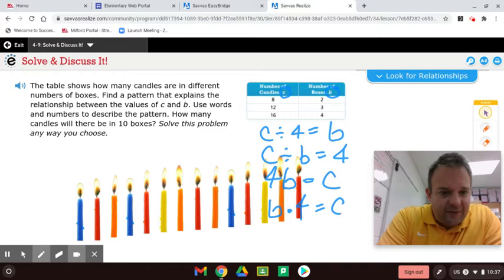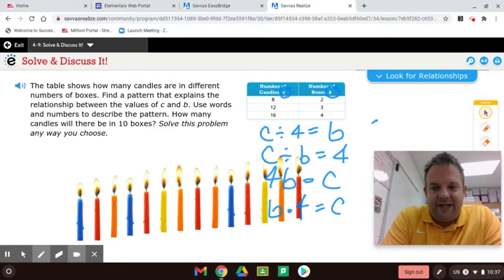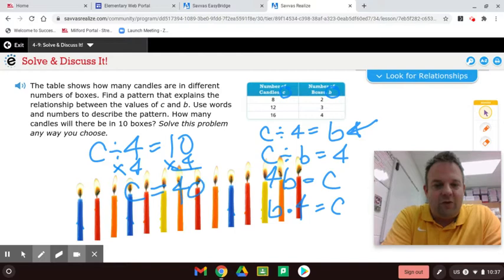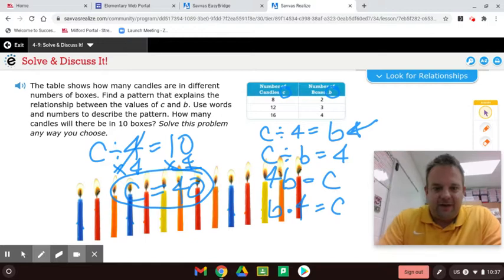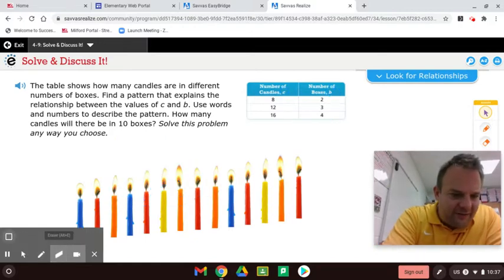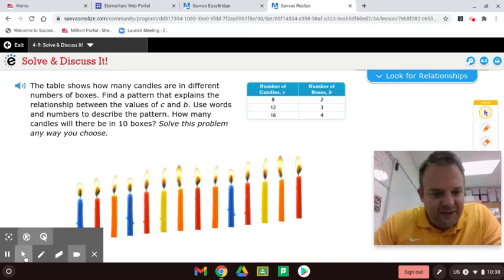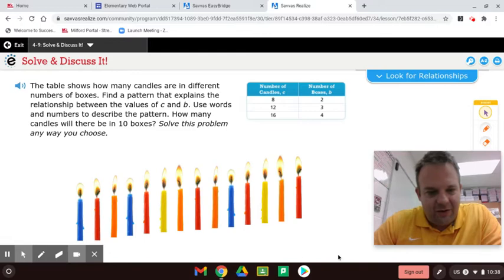How many candles will there be in 10 boxes? We would substitute 10 into here. So now you have C divided by 4 equals 10. The inverse operation of dividing by 4 is multiplying by 4, so multiply by 4 and we get C equals 40. These cancel out to 1, so C equals 40. I kind of wrote all over our lovely birthday candles. I wonder if it's anyone's birthday today.